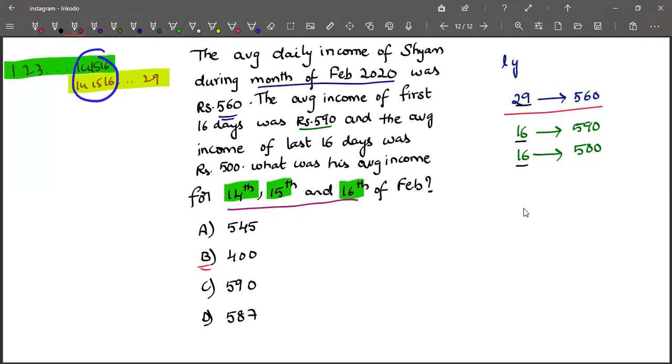How to find it is, first we will take the overall average, 560, plus, see, 590 is more than 560. How much? 30 more. And it is for 16 observations, so 16 into 30. And 500 is 60 less than 560, and how many observations? 16 observations.